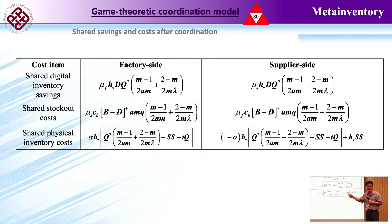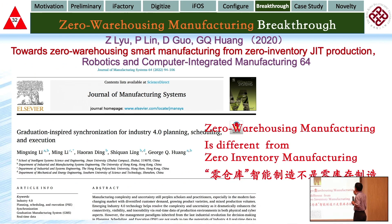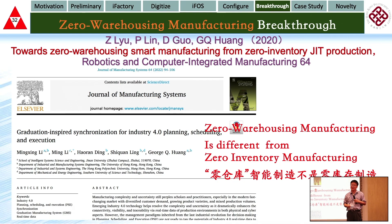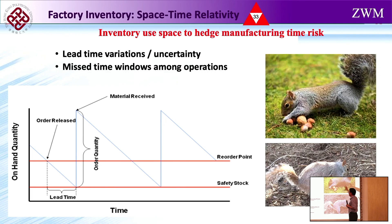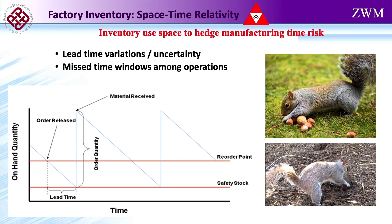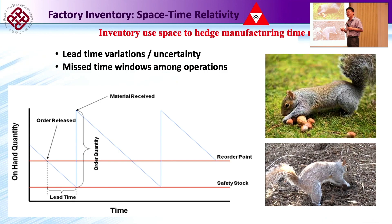The second breakthrough is zero warehousing manufacturing. Just-in-time manufacturing promotes zero inventory manufacturing, which is absolutely not possible — we have to have inventory. Even squirrels have inventory — they hide nuts for some other time. But inventory, as I said, doesn't have to be kept in warehouses. I'll show you why we don't need to keep inventory in warehouses and what the advantage is.